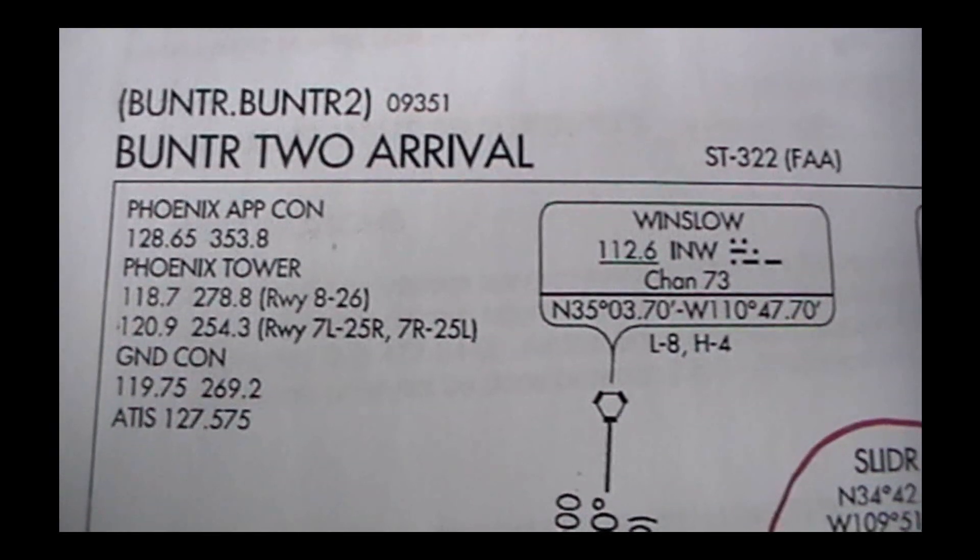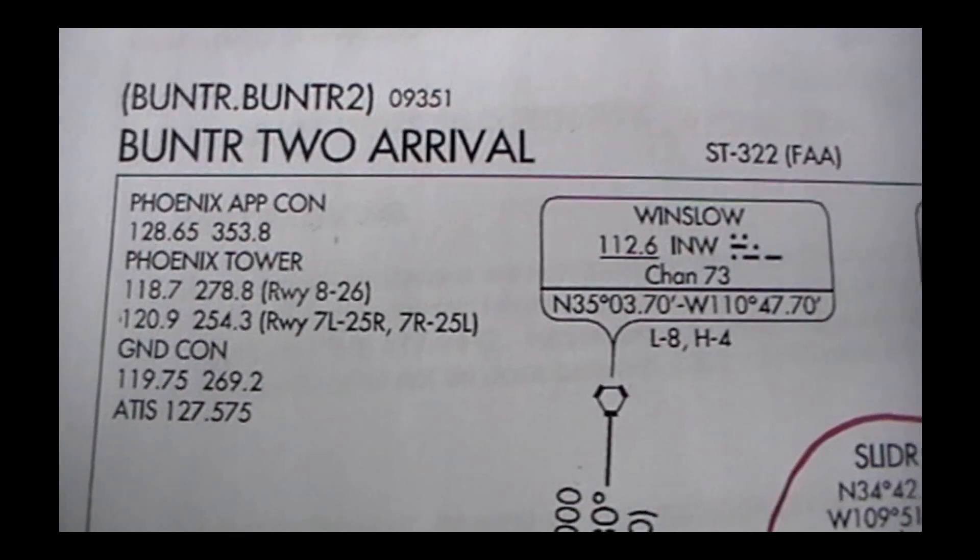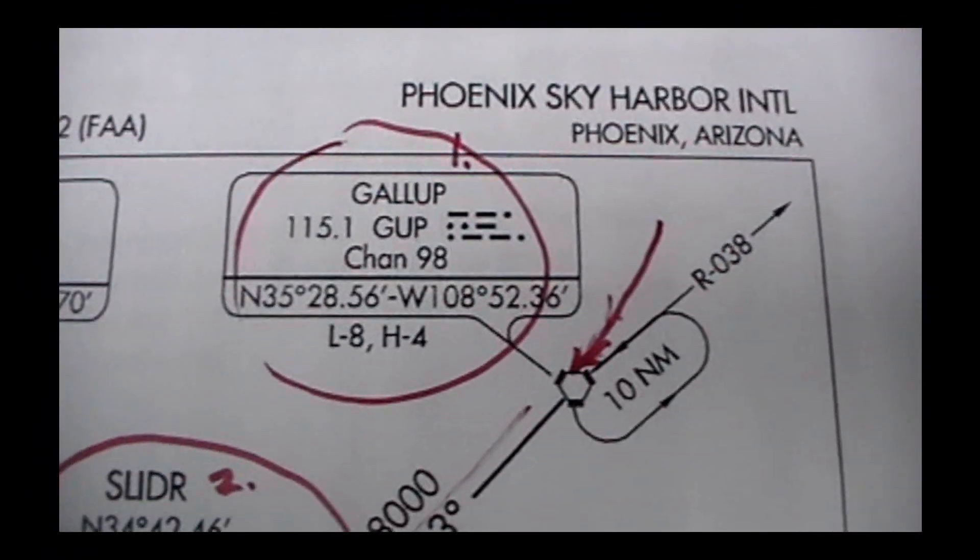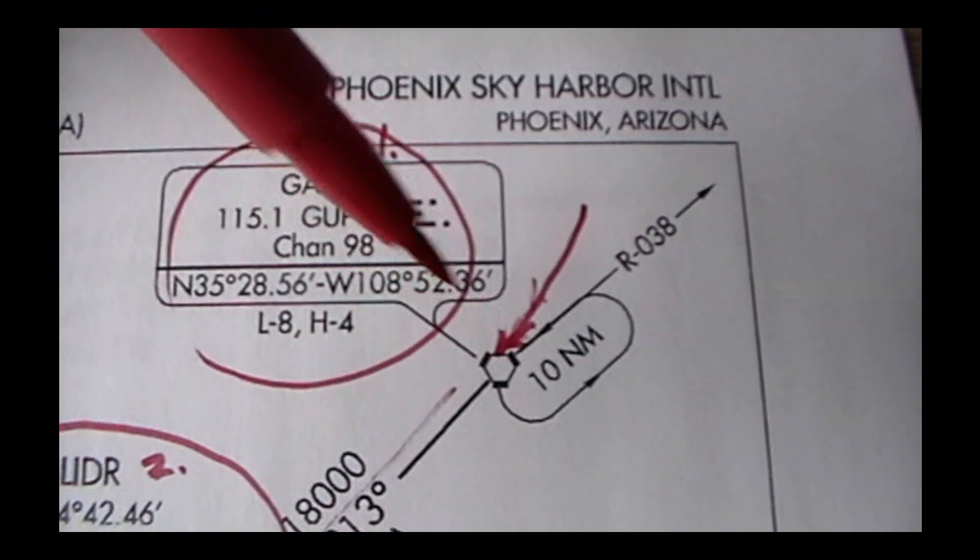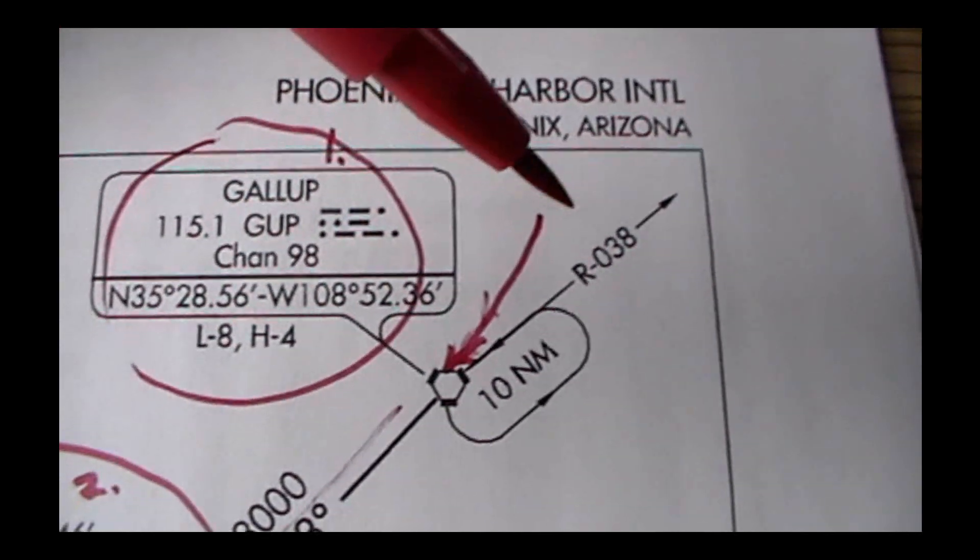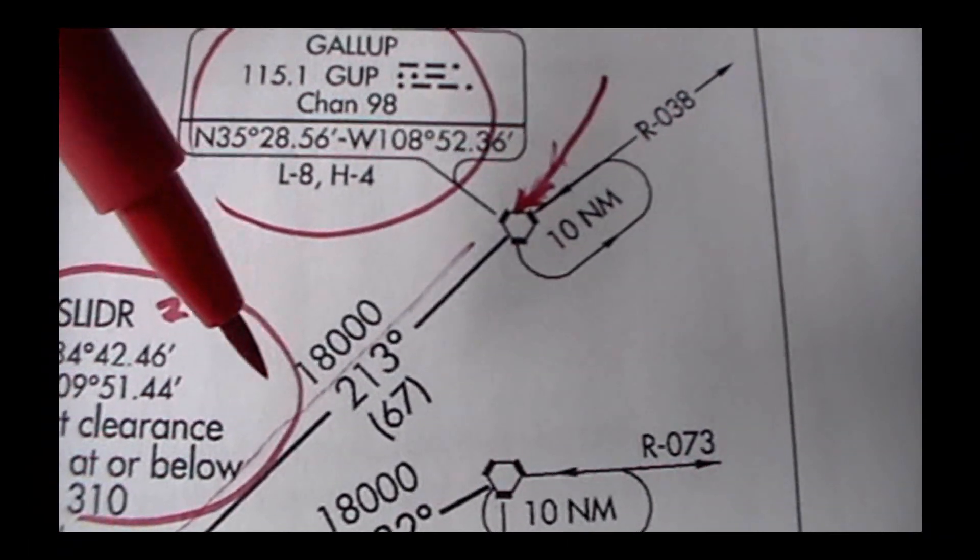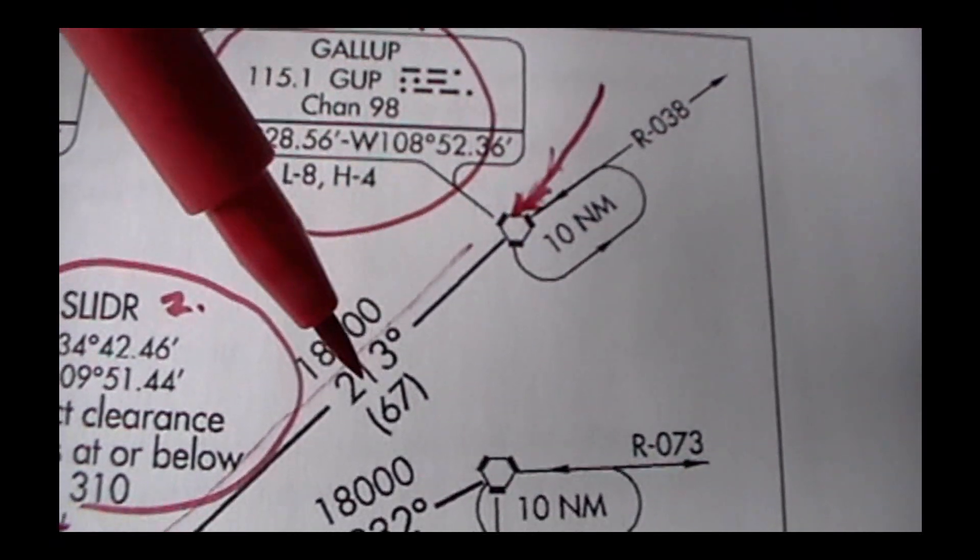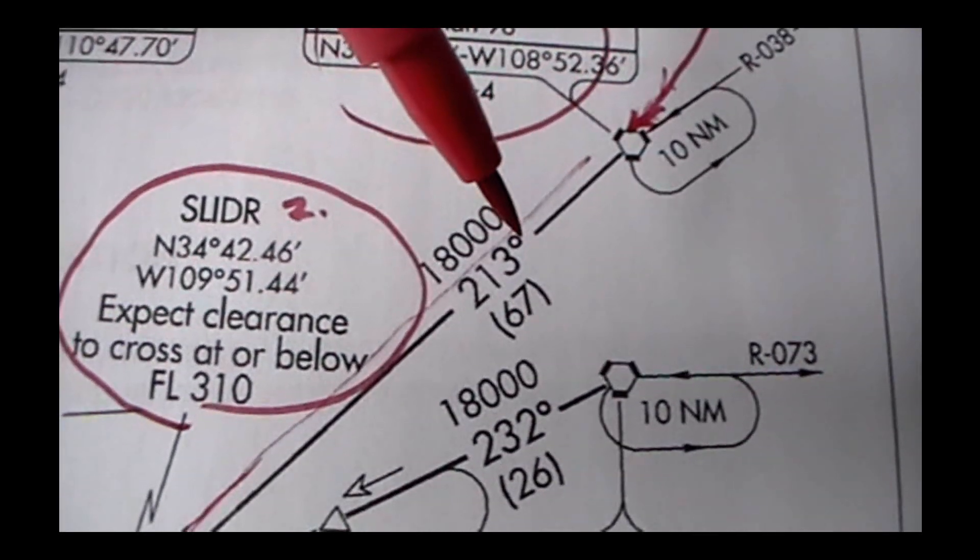Okay, this is a little bit more of a complicated chart to read. This is the BUNTR true arrival for Phoenix, Arizona. So let's suppose we start here. This Gallup VOR is one of the waypoints on the flight plan. So at this point, what you would have to do, according to this chart, is descend to 18,000 feet and fly out on outbound from that VOR on a heading of 213.